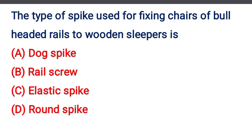Next question: The type of spike used for fixing chairs of bullheaded rails to wooden sleeper is — Option A: Dog Spike, Option B: Rail Screw, Option C: Elastic Spike, Option D: Round Spike. The correct answer is Option D: Round Spike.